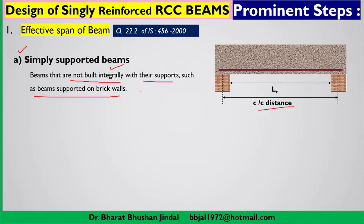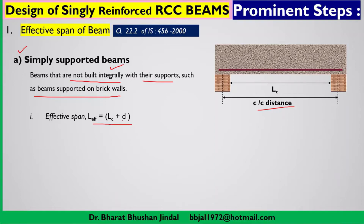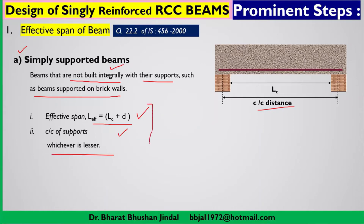We need to work out the effective span, which will be used in calculations for finding bending moments in the analysis part and later in the design part. As per clause 22.2, effective span is calculated using two conditions. First: L_effective = L_clear + effective depth (d) of the beam section. Second: center-to-center distance of supports. Whichever of these two values is lesser is taken as the effective span.